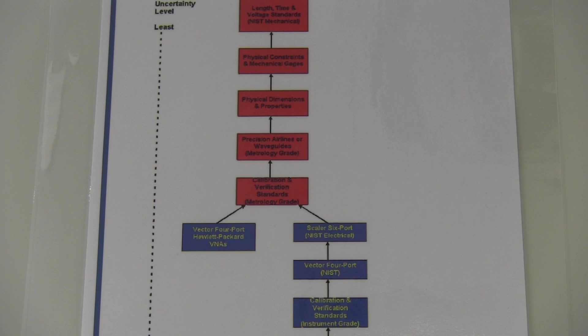Pete's going to tell us about the traceability tree for S parameters within Agilent Technologies. It's really tied to the physical dimensions and quality of the airlines that are used as references.